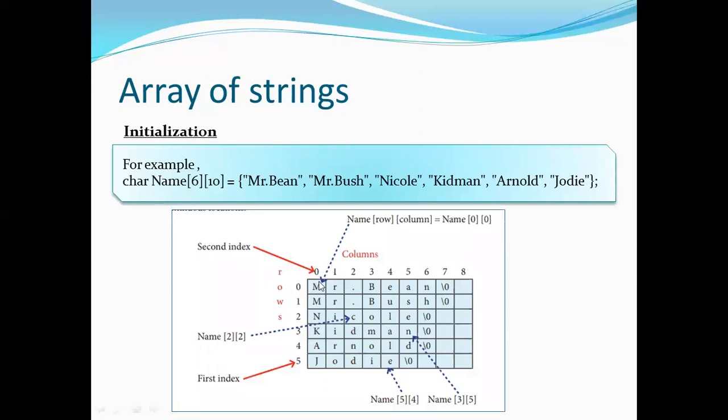Let's represent this. Mr. Bean: M, R, dot, B, E, A, N, slash zero. If you look at these strings, there is a plus one character extra for the null terminator. If you look at these strings, you can represent this. You can represent the array of strings in row and column in 2D array.